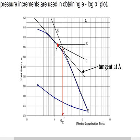Now extend the normally consolidated line backward in the reverse direction. This extended line meets the bisector at a point — that is the intersection point O. From this merged point O, draw a straight vertical line down to the x-axis. The pressure value at that point on the x-axis gives you the pre-consolidation pressure, Sigma PC.